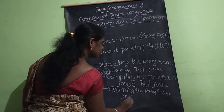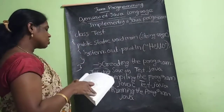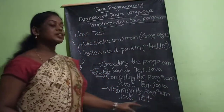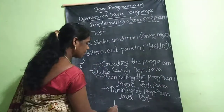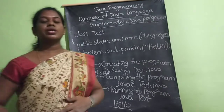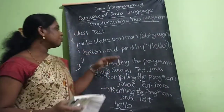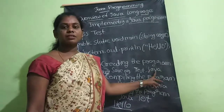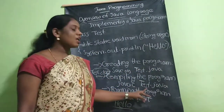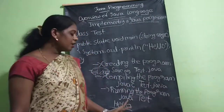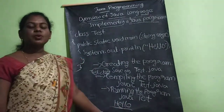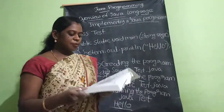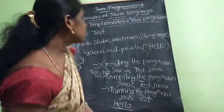To run the program, the interpreter named 'java' is used. You type 'java Test' — do not add the dot-java extension here, just the class name. The output will print 'Hello'. This is the way of executing the program. Next concept is command line arguments.